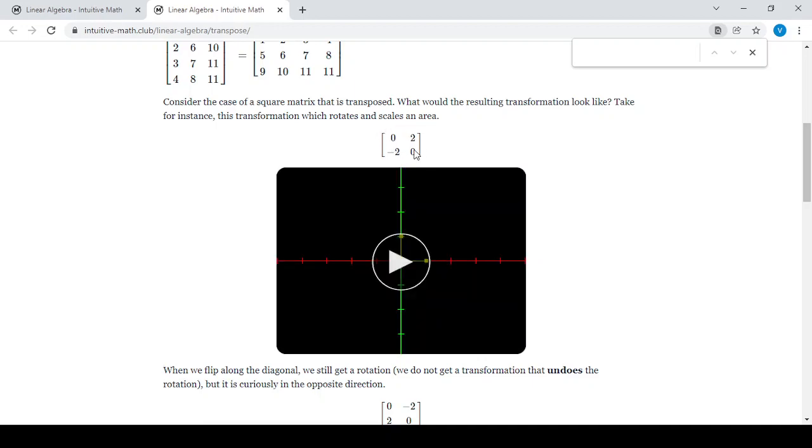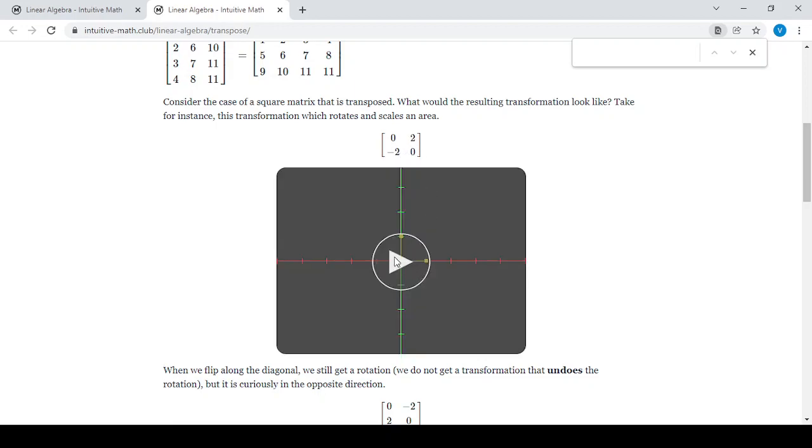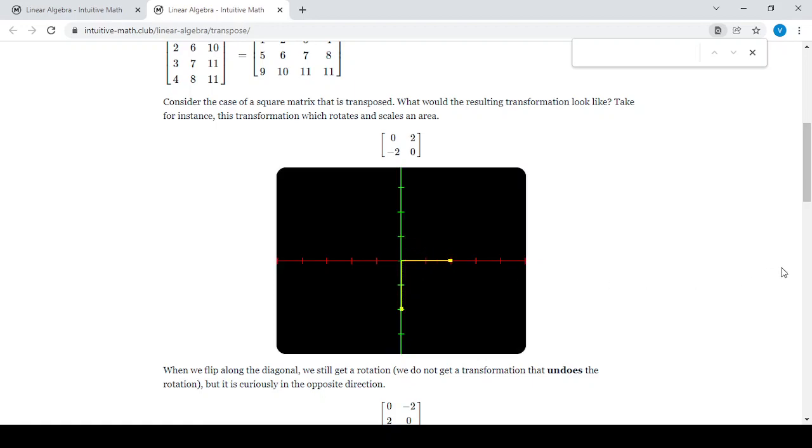If I use this as the transformational matrix on the left and multiply it with the unit matrix, this will be the effect you get. You can see it's moving clockwise by 90 degrees and also getting scaled by two.